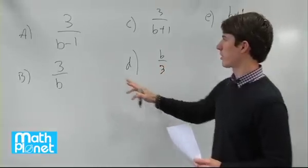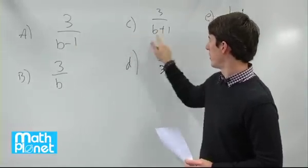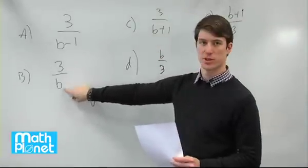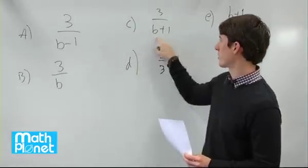We want the denominator to be the largest, so now we can compare these two. This will give us a number that's greater than 3 on the bottom, and this will give us a number that's just greater than 3, just b. So this will be even larger.